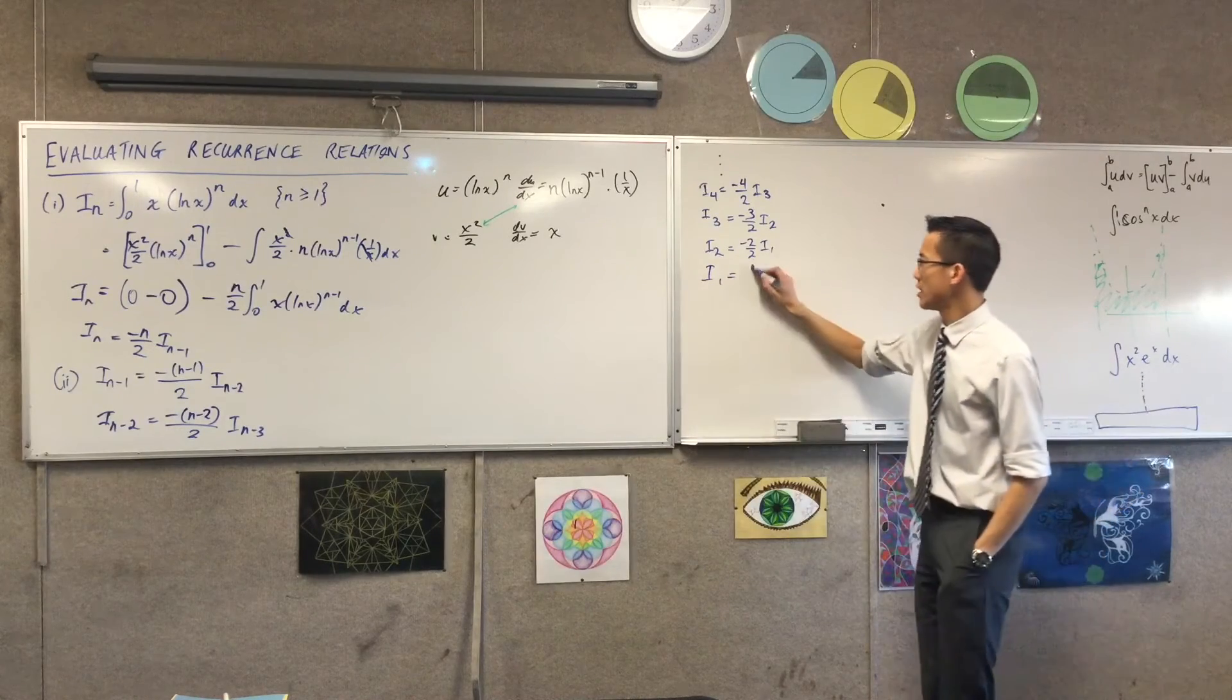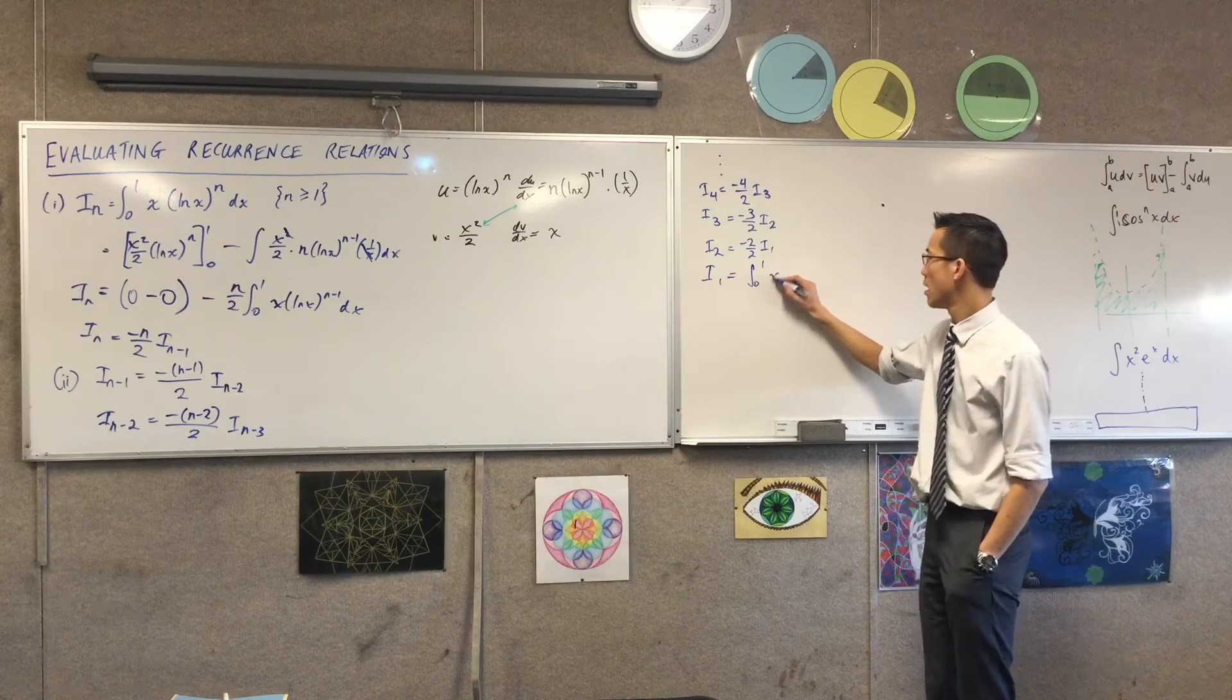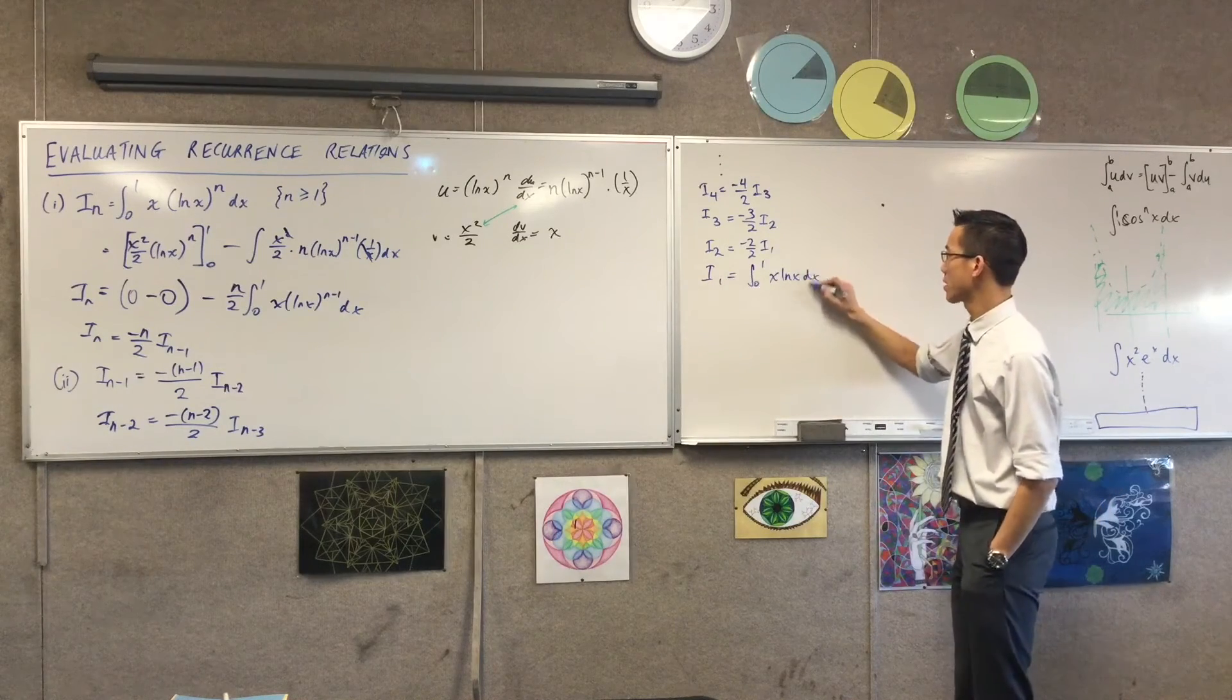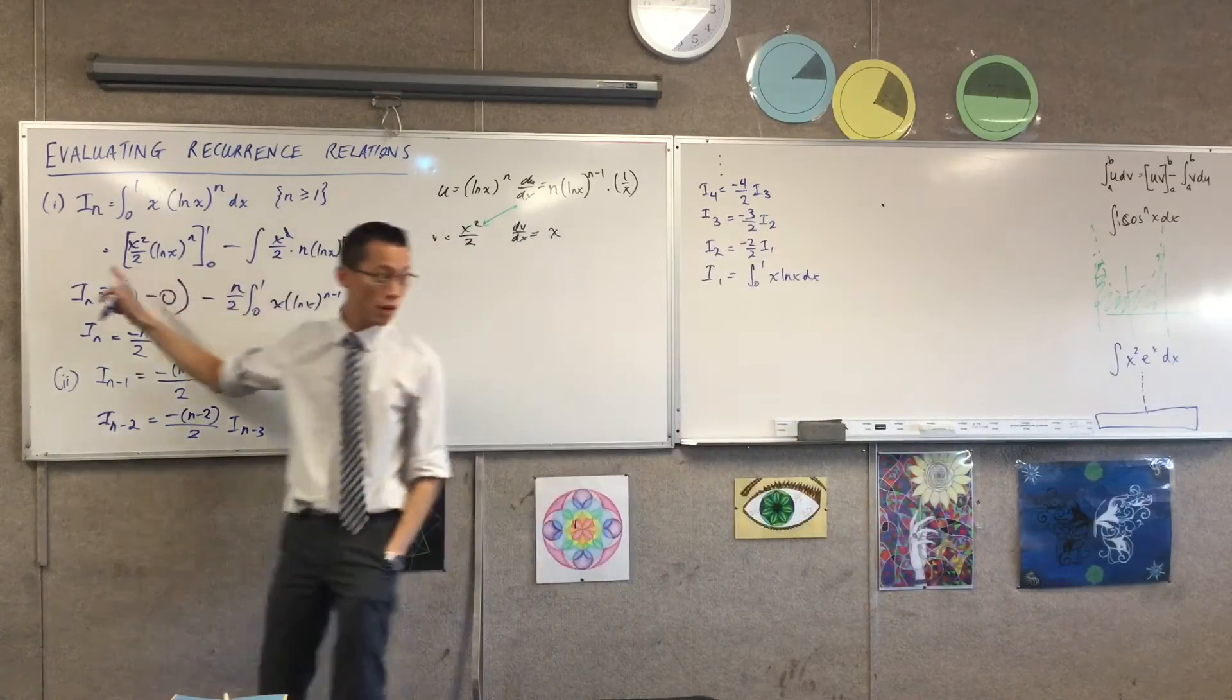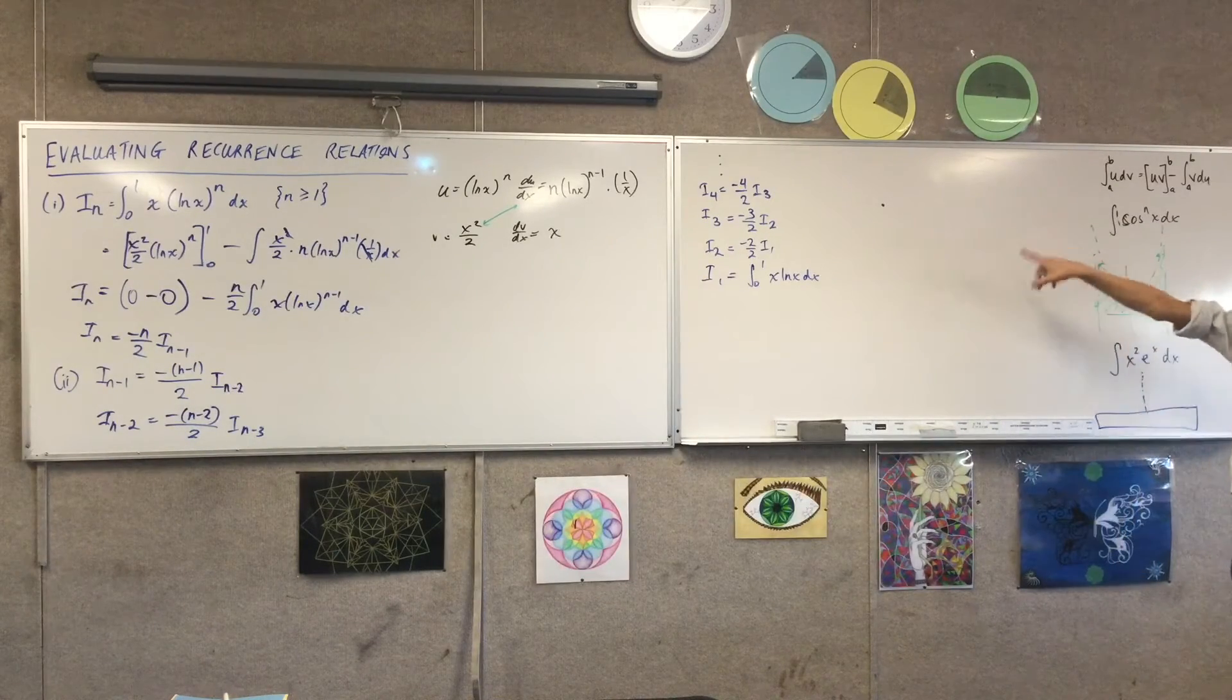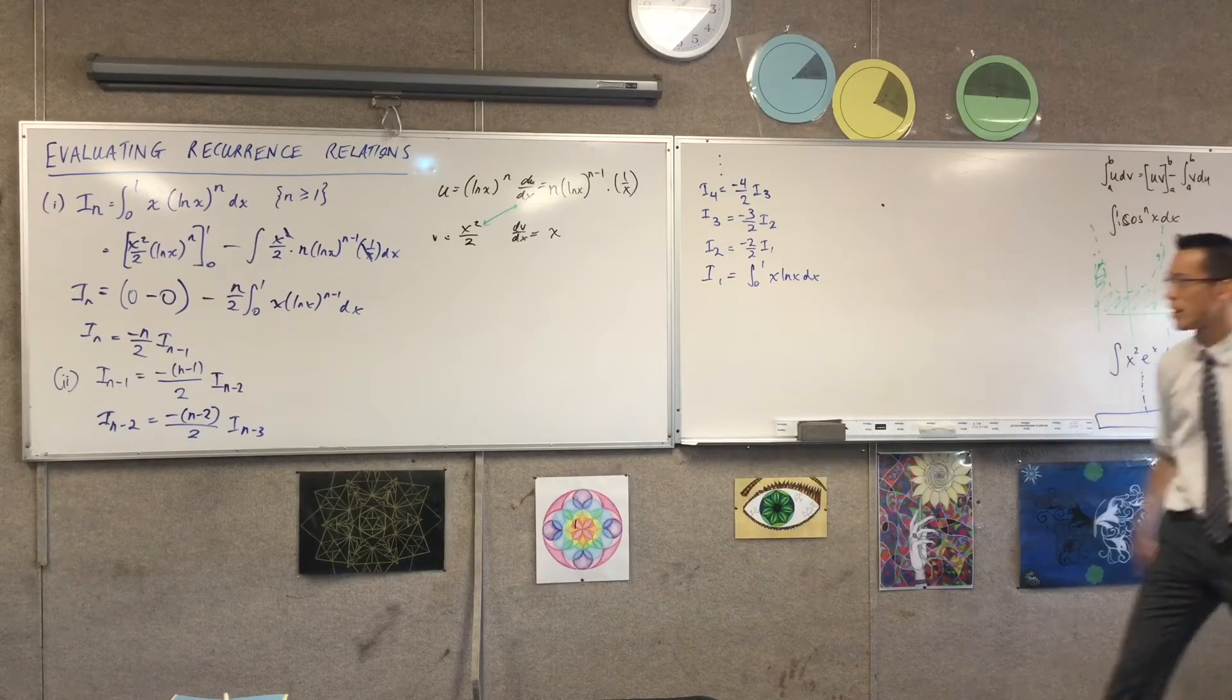I1 is actually the integral from 0 to 1 of x ln x dx. Which, again, this is the same problem that I had before, but that's okay. We will deal with this when we eventually get there. x log x, we've done this before. This is one of the simplest questions under integration by parts. Can we do our u and our dv?